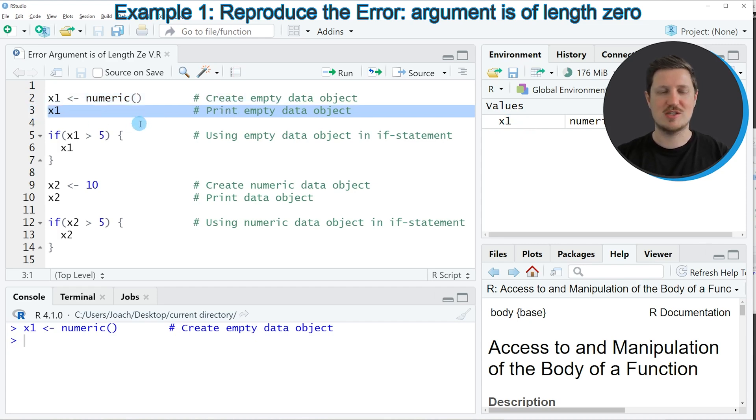And in the next step, in line 3, I'm printing this data object to the RStudio console. And then you can see that we have created a numeric data object which contains no elements yet.